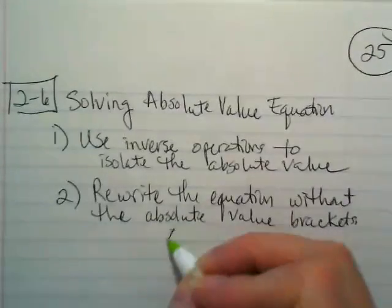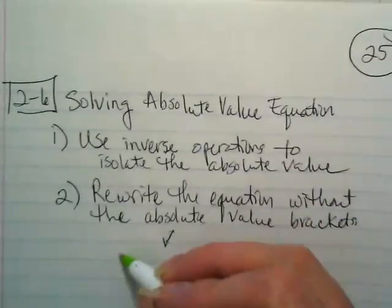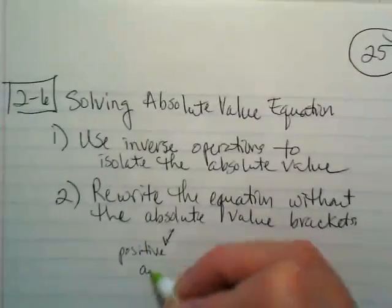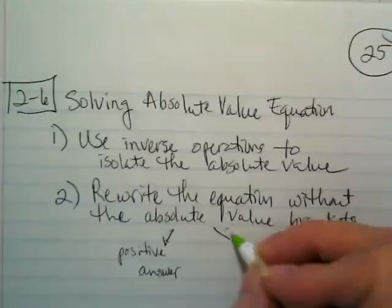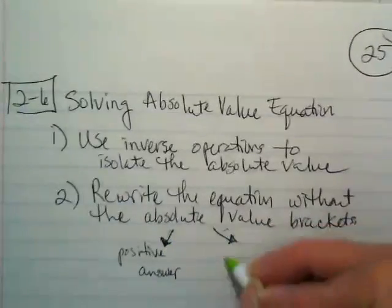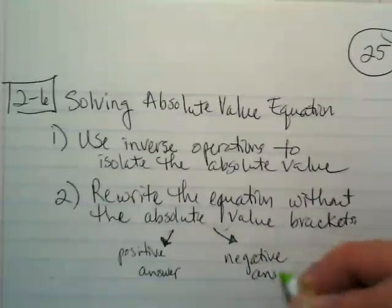When we take the absolute value brackets away, we take what was inside of it, and we write one with a positive answer. And the same thing that was in the absolute value brackets also gets a negative answer. We're trying to find the two possibilities.